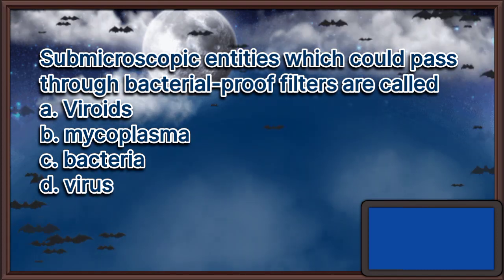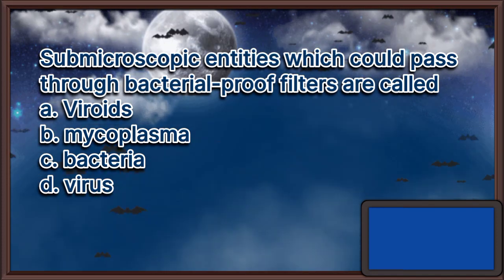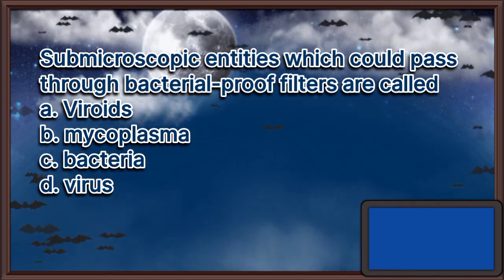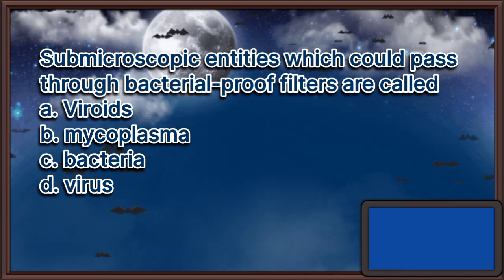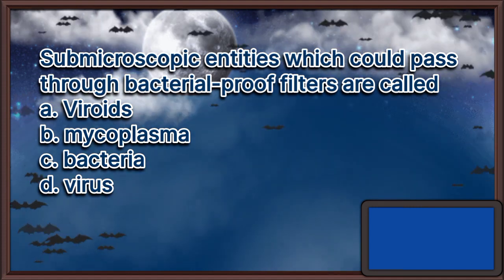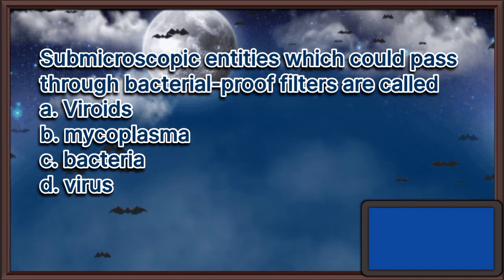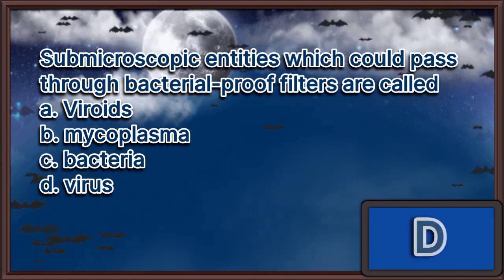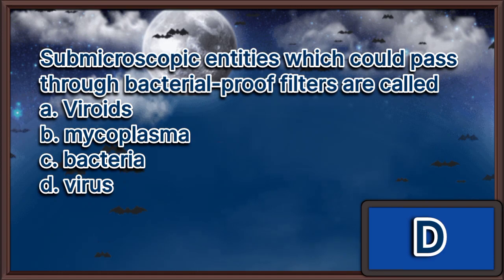Submicroscopic entities which could pass through bacterial-proof filters are called. A. Boroids. B. Mycoplasma. C. Bacteria. D. Virus. The answer is letter D.